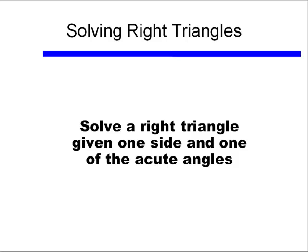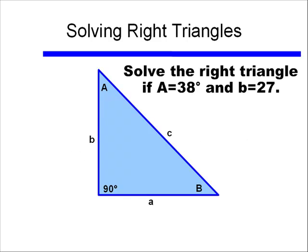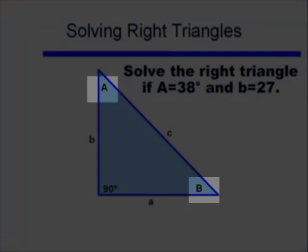But let's take an example. If I'm asked to solve the right triangle, given that A is equal to 38 degrees and B is equal to 27, we need to figure out if I have enough information to solve this. Now first of all, I want to go over a little bit of nomenclature. You notice now I have my angles in capital A and capital B, and then that third angle is 90 degrees.